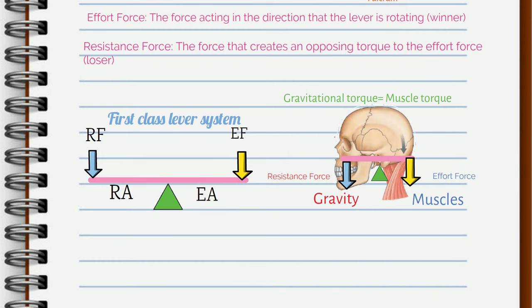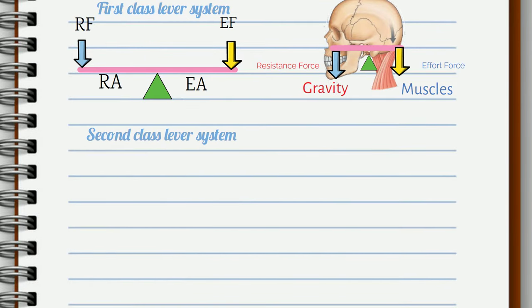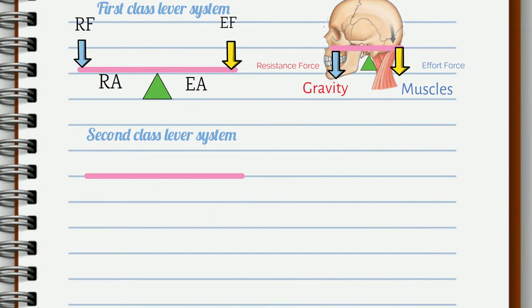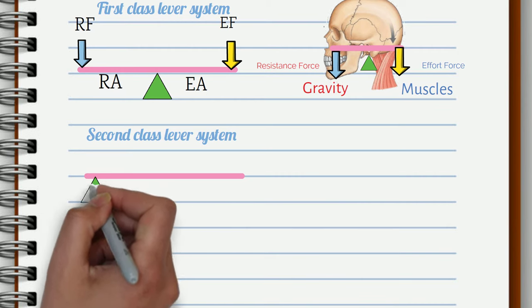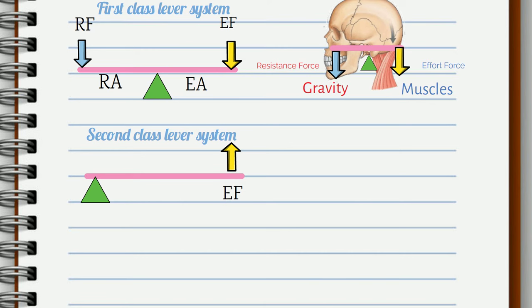Now let's take a look at the second class lever system. There are two distinct features. The axis of rotation is located at the end of the lever. Effort force is further from the axis of rotation than the resistance force.